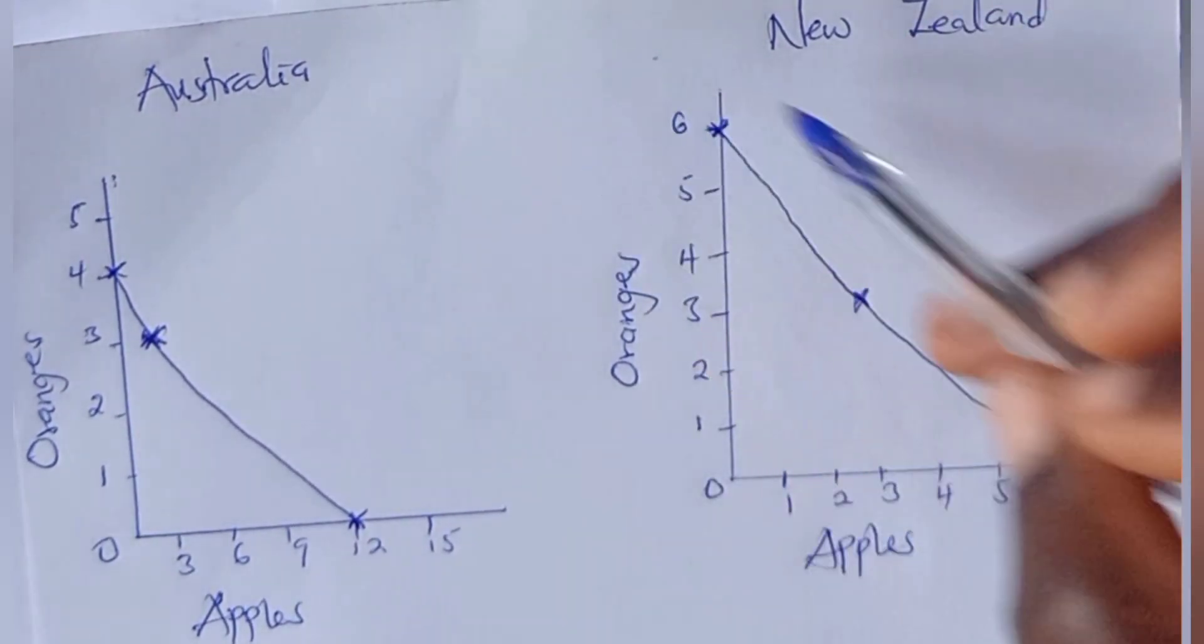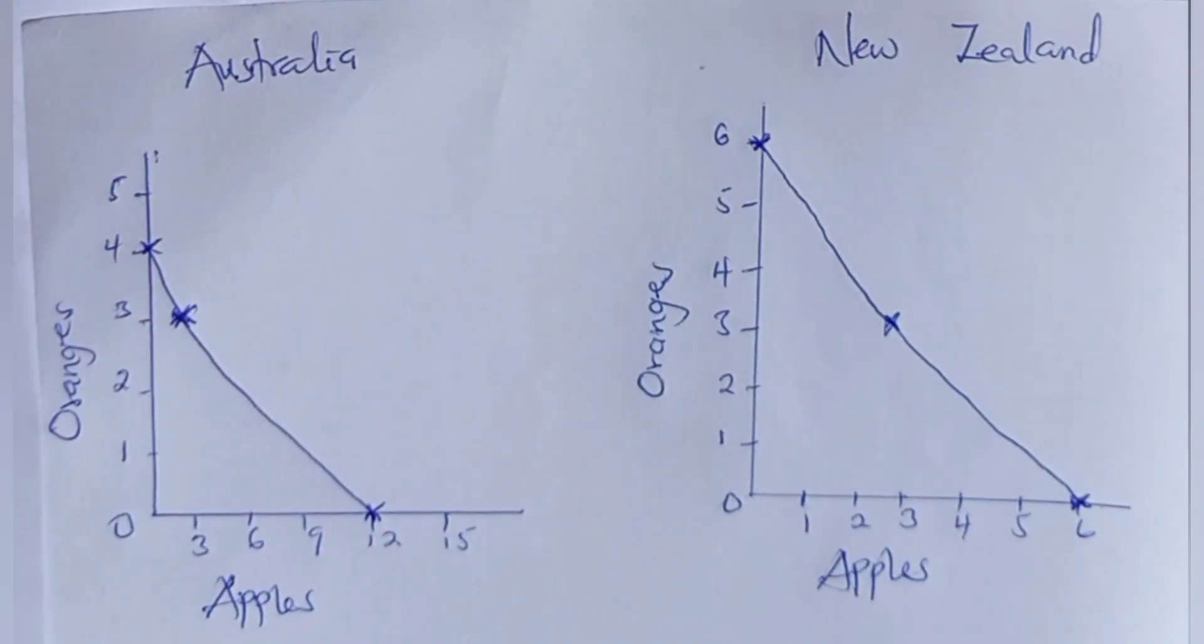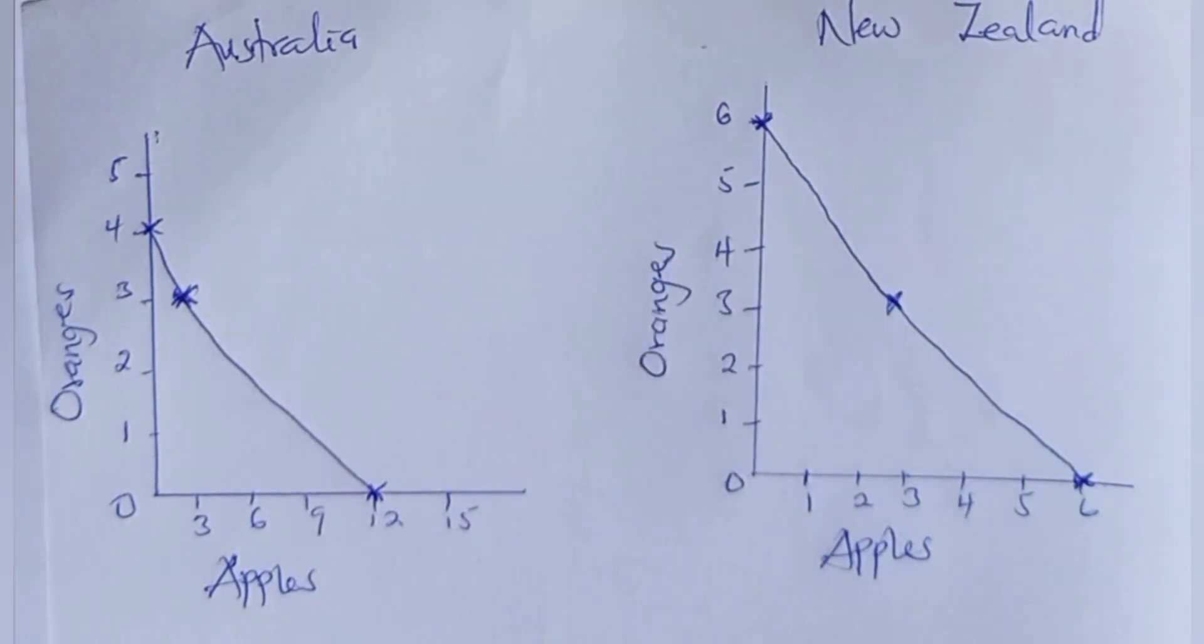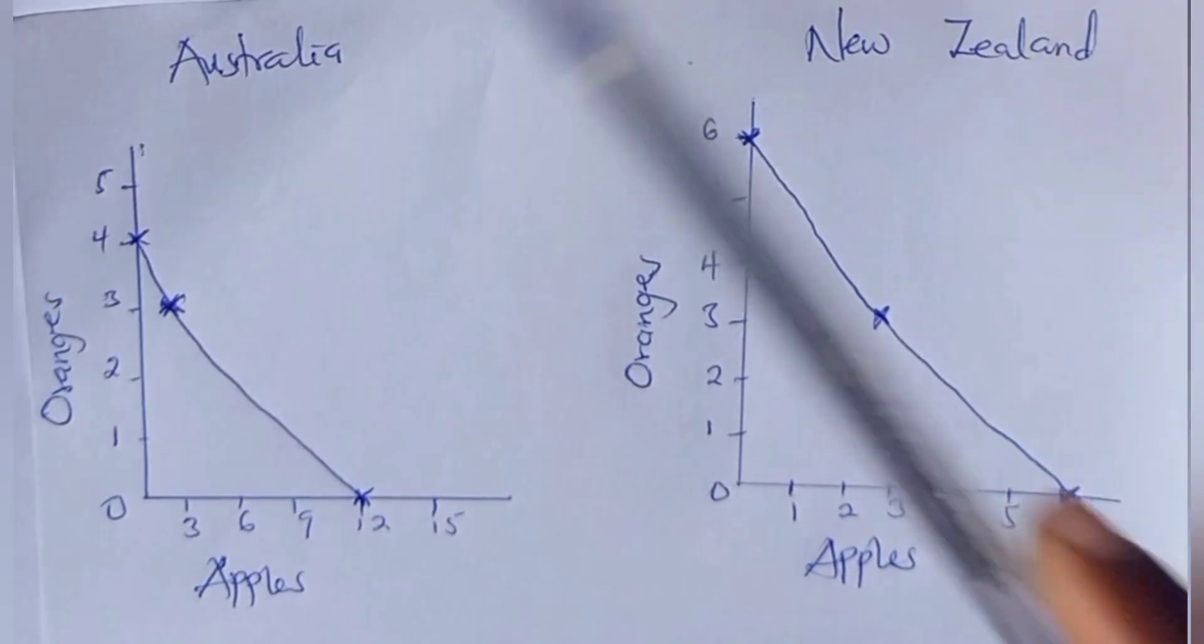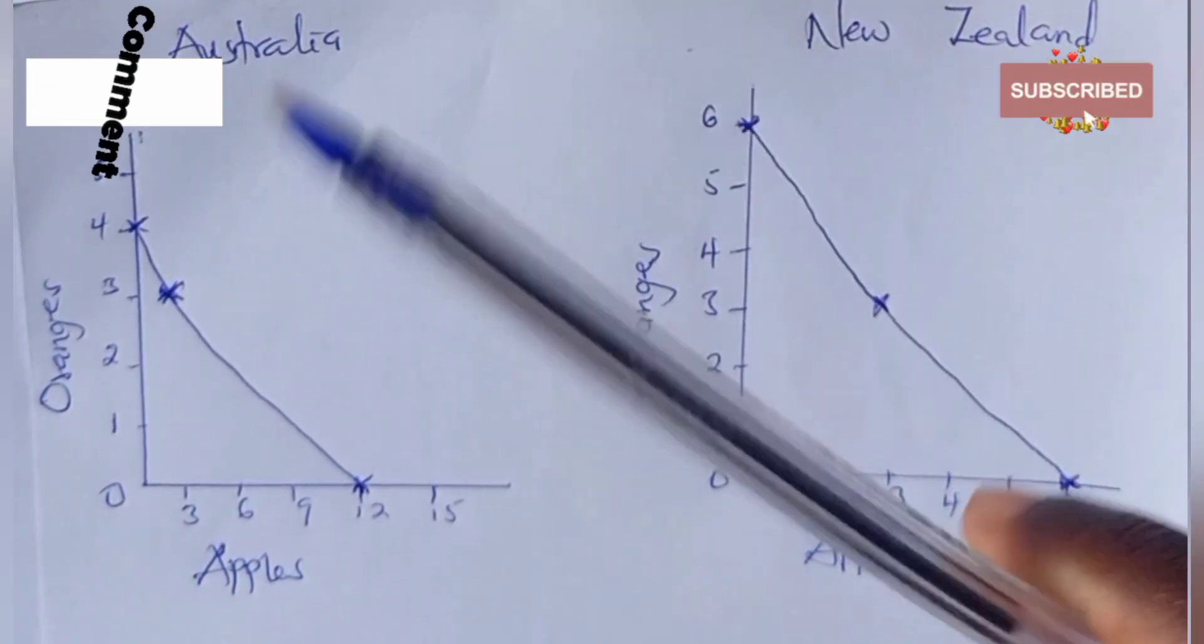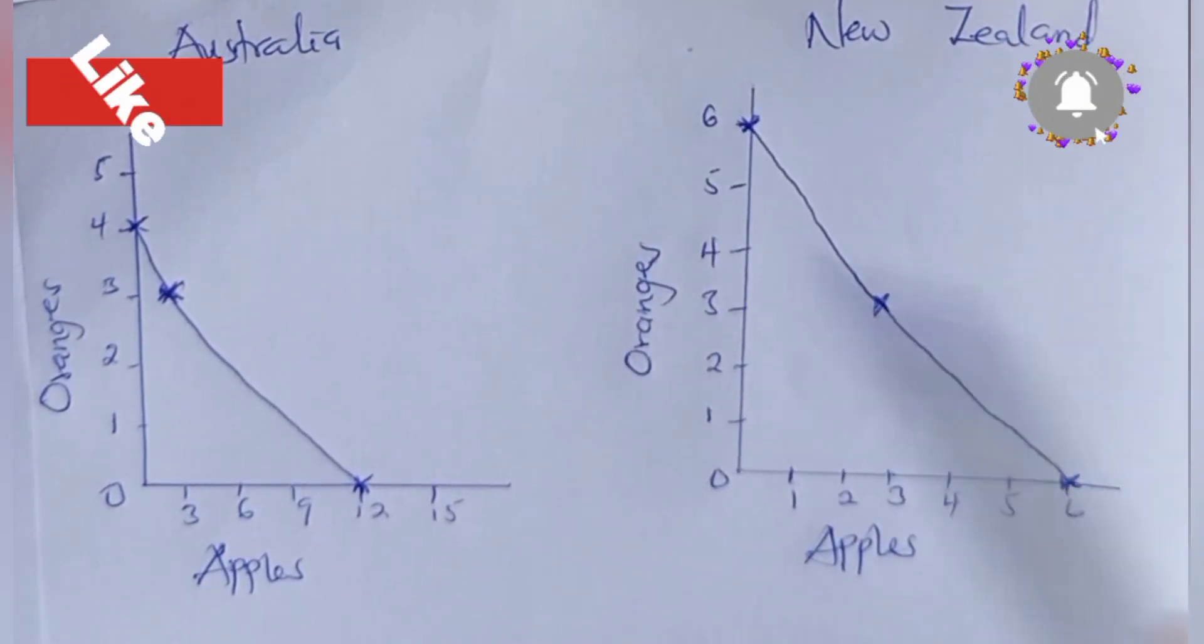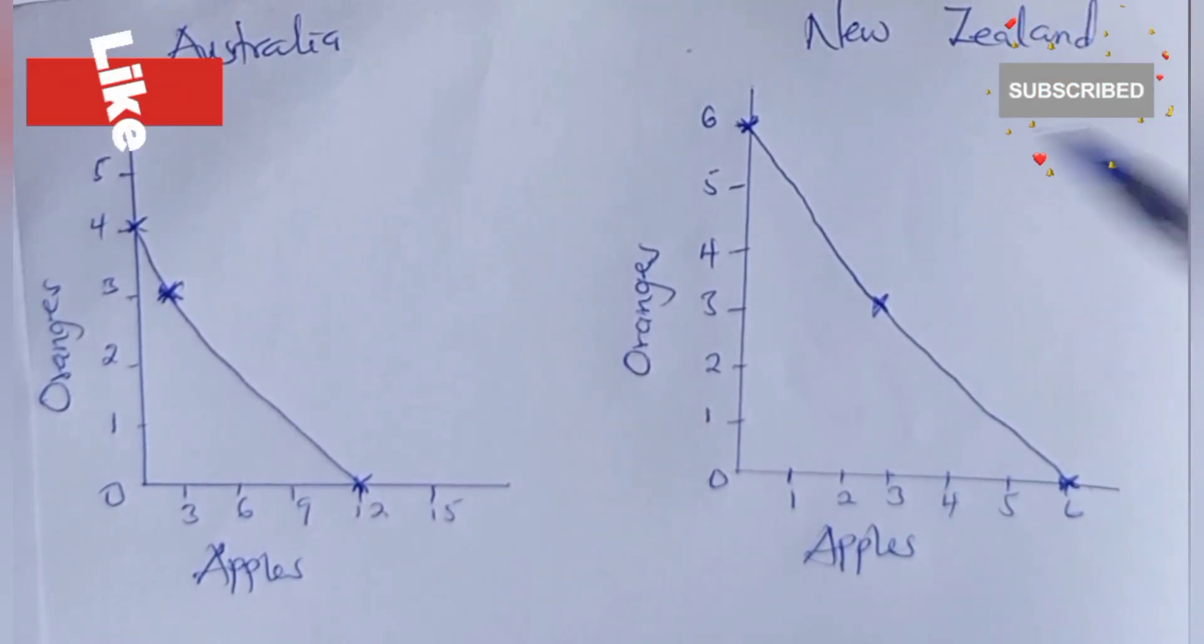If you see any question that requires you to draw PPF for countries, this is how you go about it, and I believe that it was helpful. In my next video I'm going to calculate the opportunity cost for both countries, and then we also see if the opportunity costs are either increasing, decreasing, or constant. Without wasting much time, just hit on the next video and then come with me to calculate the opportunity cost for Australia and New Zealand in this question. It's bye for now and thank you for joining this lesson.